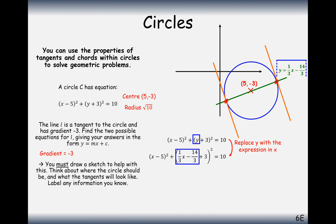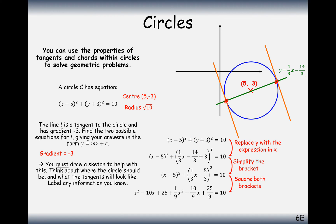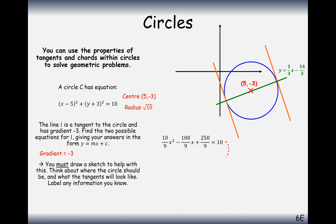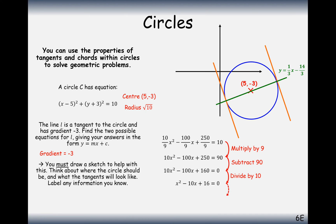Doing this carefully, expanding and simplifying all brackets, and grouping like terms, we get (10/9)x² - (100/9)x + 250/9 = 10. Multiplying through by 9, subtracting 90, then dividing through by 10 and solving, we get x = 2 and x = 8 as our two x-coordinates.